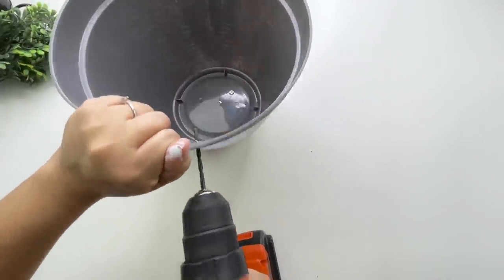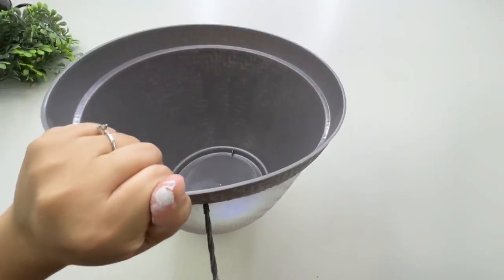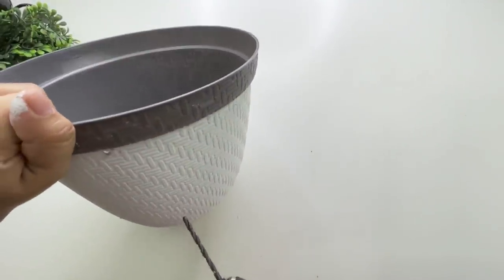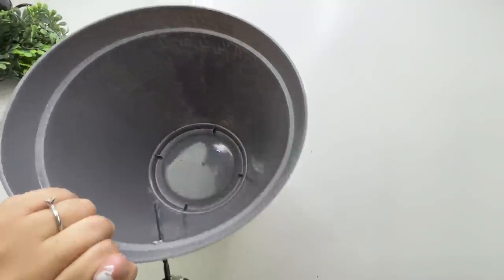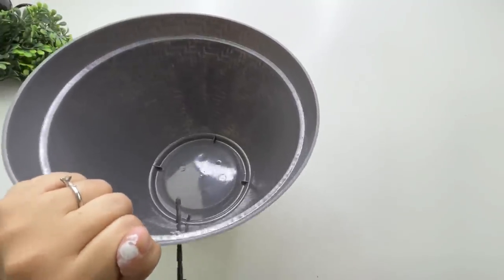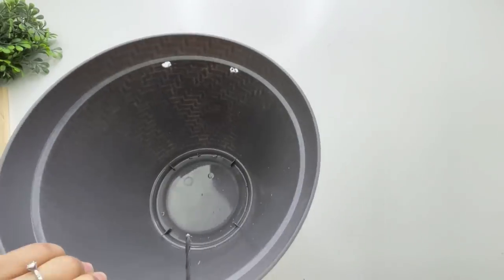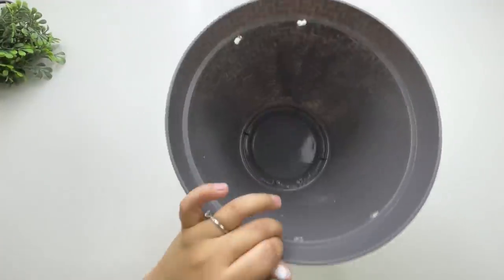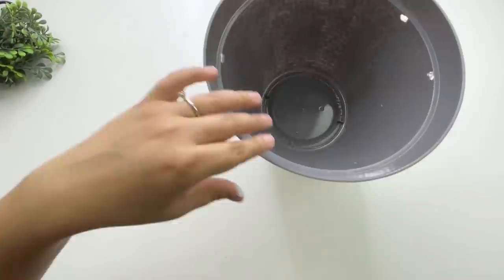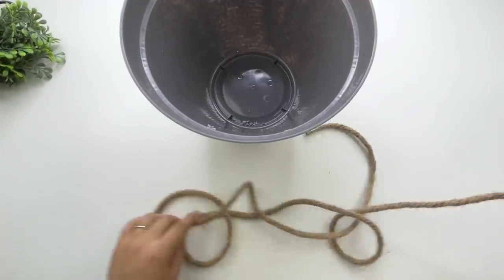And I'm going to drill two holes, two on each side. This is where I'm going to add some handles. I will be using some Dollar Tree nautical rope to make the handles.